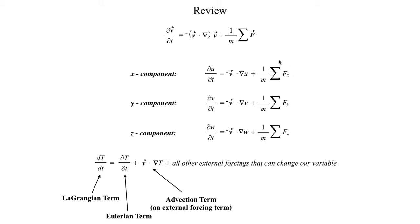All the forces acting in the x direction will influence the change in the zonal wind. Similarly with the y component or the meridional component, the change in that wind is equal to this momentum advection term plus all the mass normalized forces acting in the y direction. And last but not least, the vertical component: the change in vertical wind with time is equal to the advection of vertical momentum plus all the mass normalized forces acting in the vertical direction.